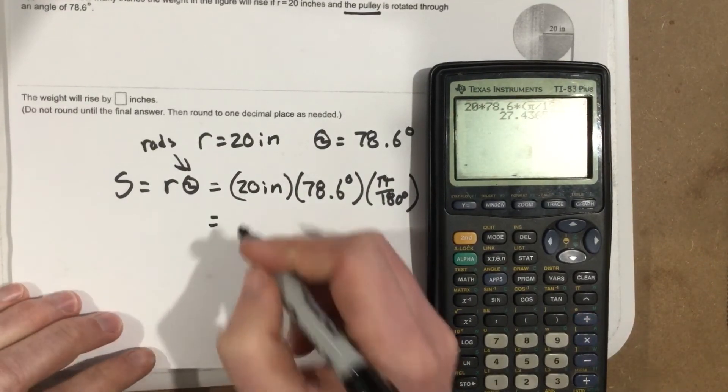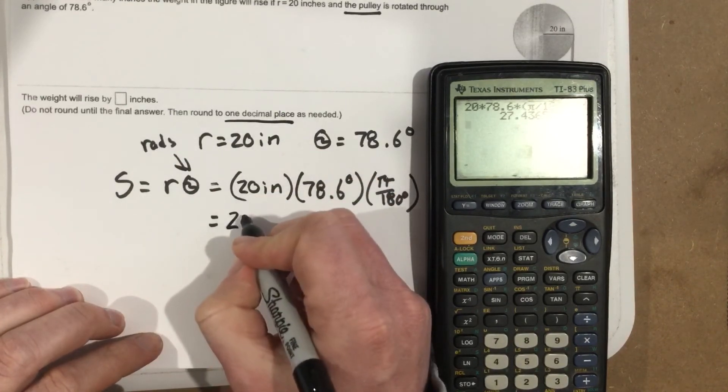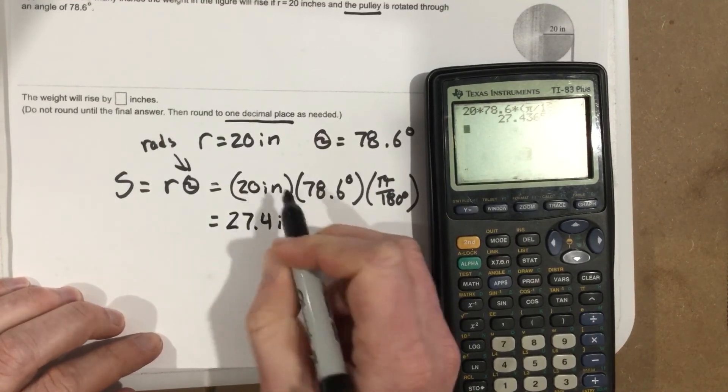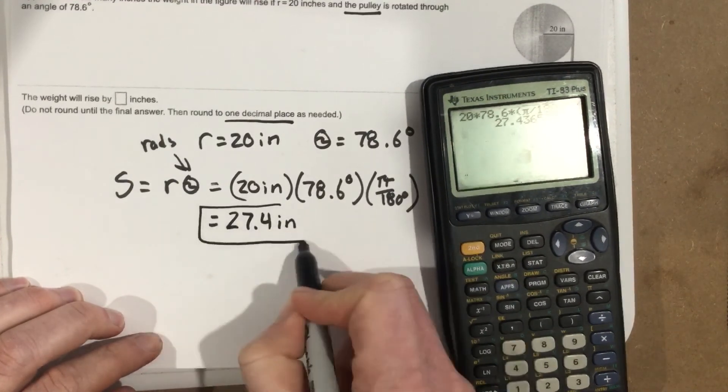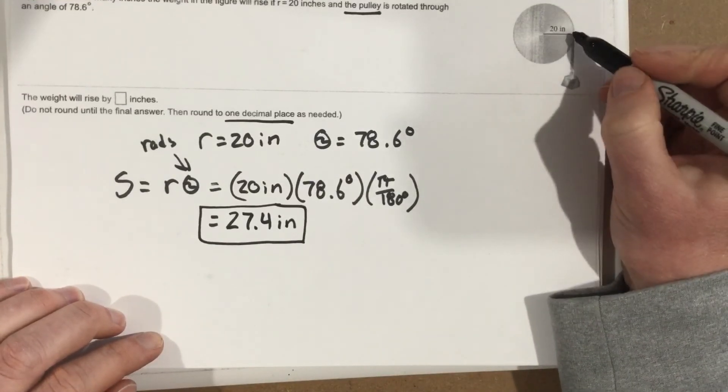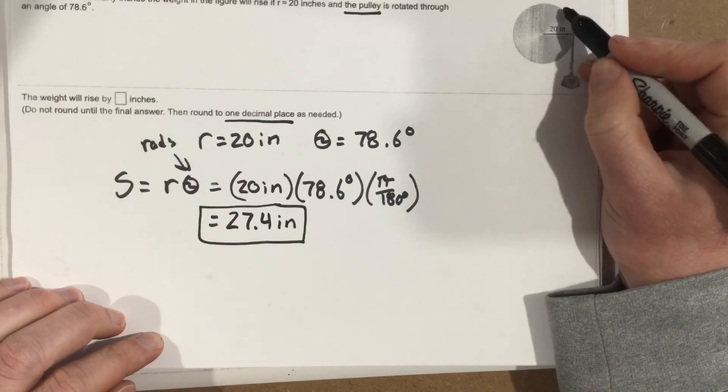And it says 24, and it says round to one decimal place, so 27.4 inches. So that weight is going to rise 27.4 inches because this pulley is twisting 27.4 inches.